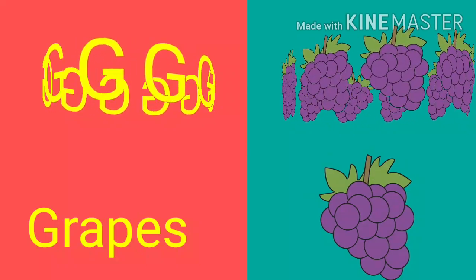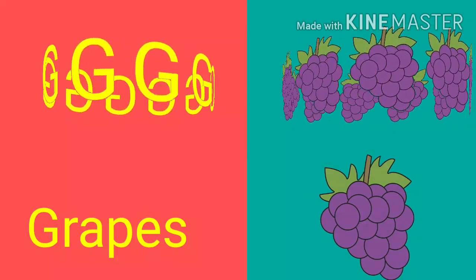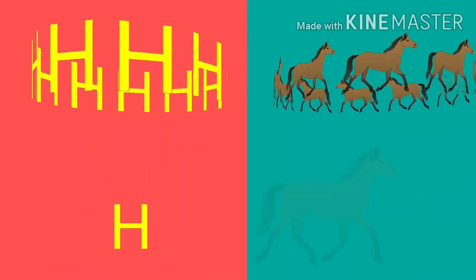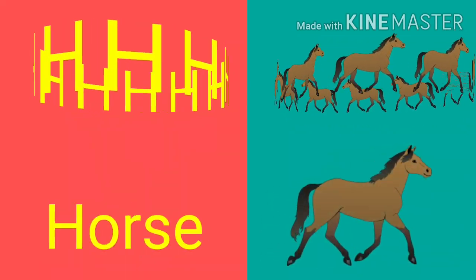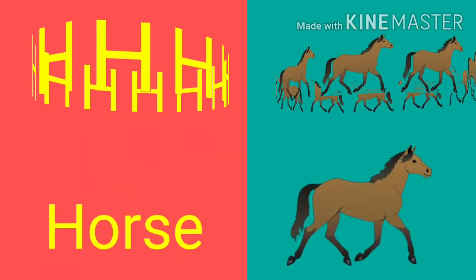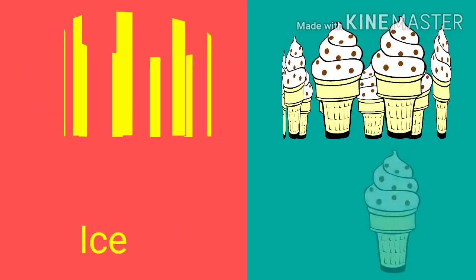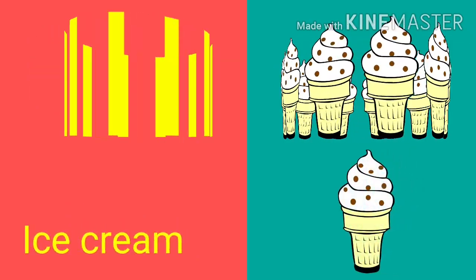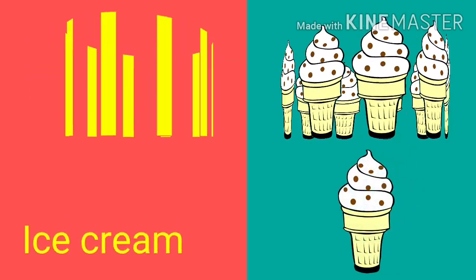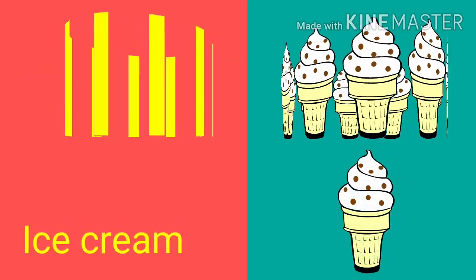G for grapes, H for horse, I for ice cream.